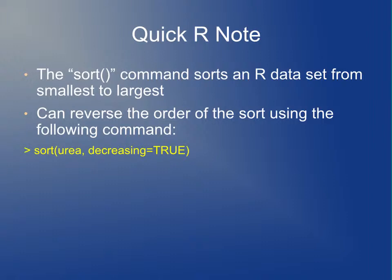In general, if there's an odd number of observations, the median is just the middle number. If there's an even number, then you take the two middle values and add them together and divide by 2, because there's no exact middle number if there's an even number of observations. If you go from 1 to 5, then 3 is exactly in the middle. But if you go from 1 to 6, then 3 and 4 are equally close to the middle, so you just average observations 3 and 4. Quick little R note: the sort command in R sorts the data from smallest to largest. If you ever need to sort the data from largest to smallest, then you can do sort urea and say decreasing equals true, and that'll sort the data from largest to smallest.